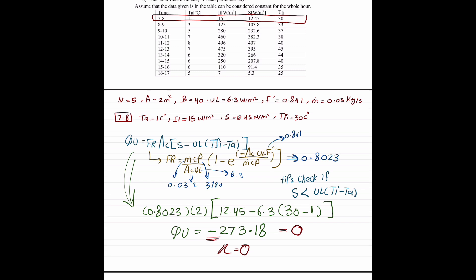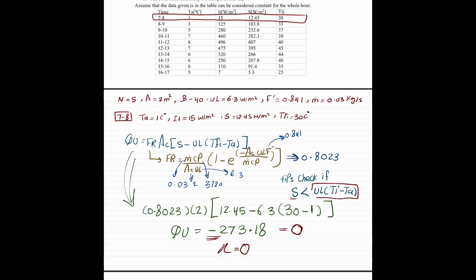If it's less than the value of S less than this, then QU directly equals to 0, which means the efficiency equals to 0. Here, if you'll check, you'll find that S is less. So, we'll basically have 0s for both.